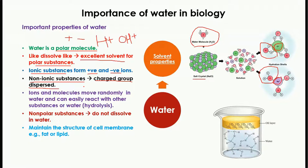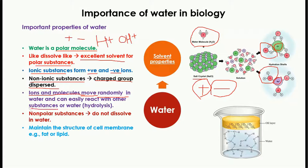Non-ionic substances with any charged group will also have that charge dispersed. When ionic substances or molecules dissolve in water, they dissociate into positive and negative ions that randomly move in the water. These ions can encounter other ions and easily form bonds — providing a medium for the generation of new substances.